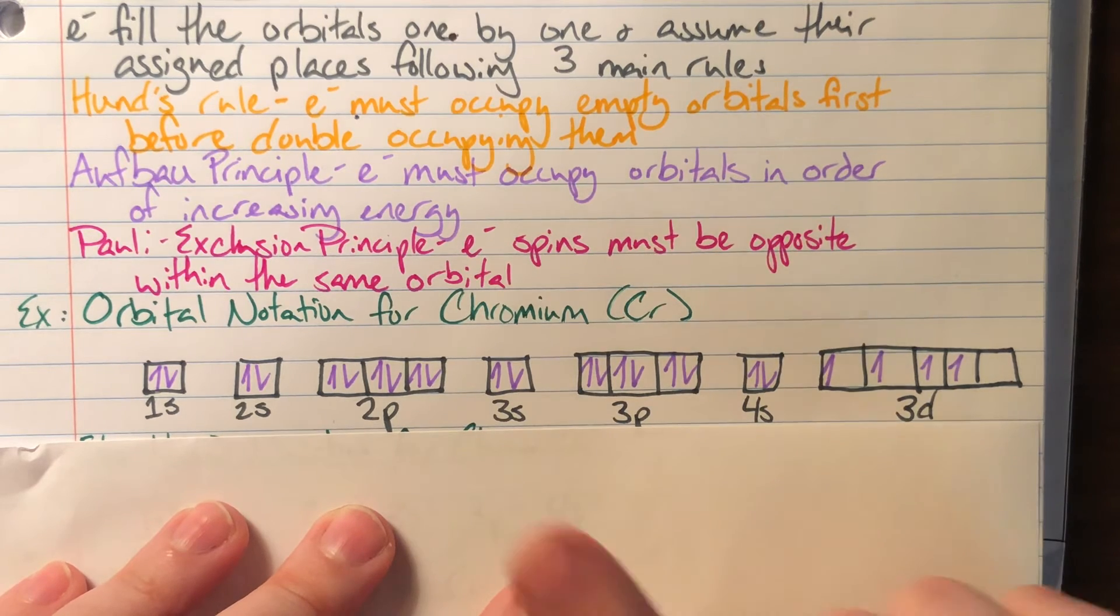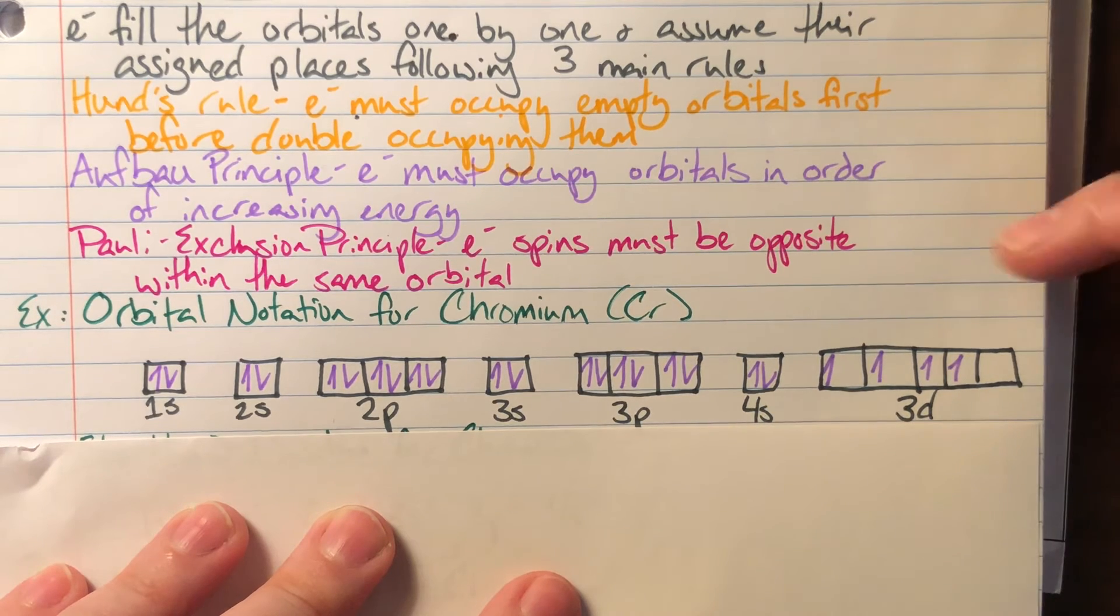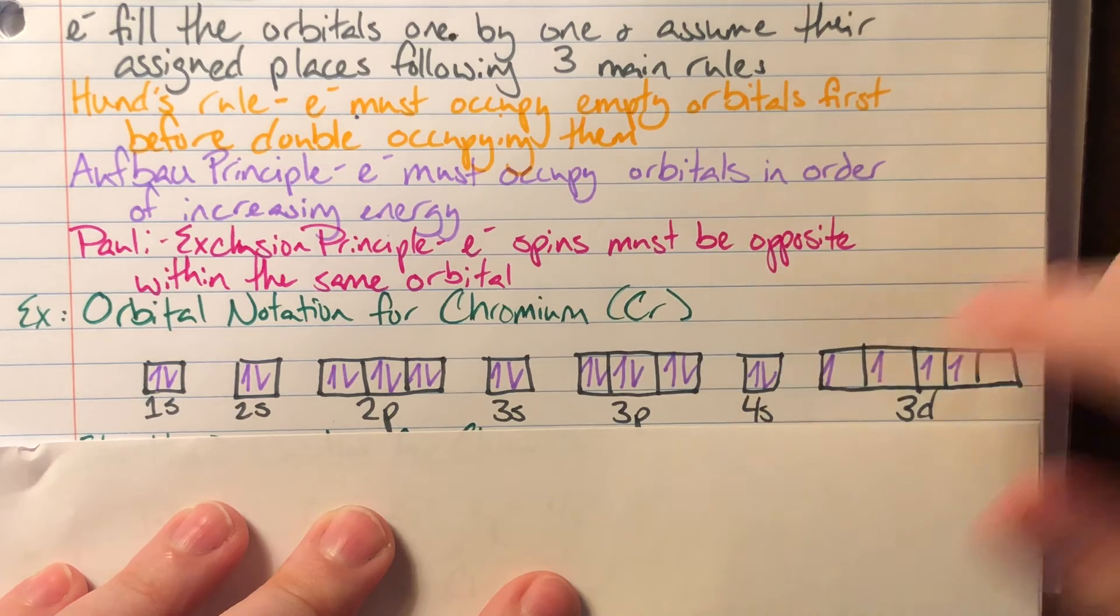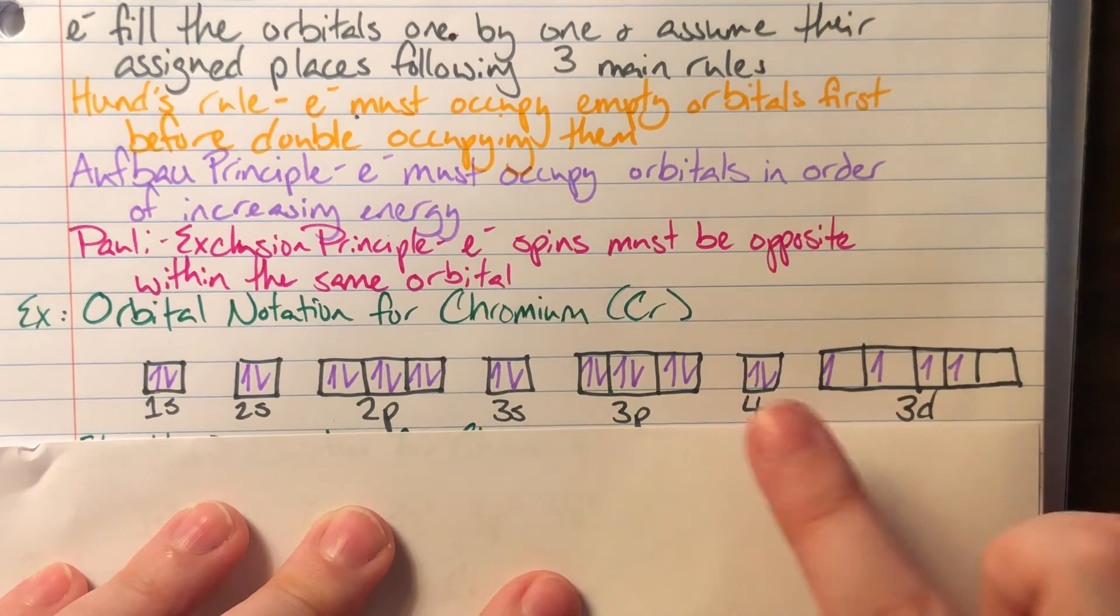You might have noticed that I was pointing to electrons in order of fill. That means I was skipping over electrons. And that is because they do prefer to sit alone. Remember that I am going to be following Hund's rule, which means that I'm going to be filling the empty orbitals before I ever double fill. So I will fill like this.